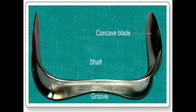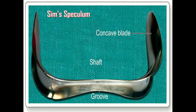Another important instrument is the Sims speculum, which is used to examine the anterior vaginal wall for diagnosis of vesicovaginal fistula and to diagnose pelvic organ prolapse. An important point is that the patient needs to be in the left lateral or Sims position while being examined with the Sims speculum.